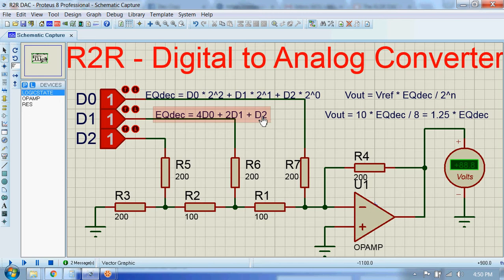Where D0, D1, and D2 are the input bits. Here the analog output voltage is given by 1.25 times this decimal equivalent.